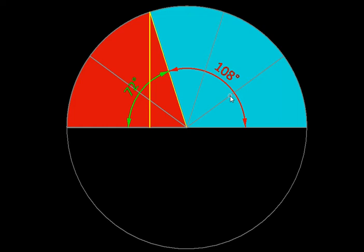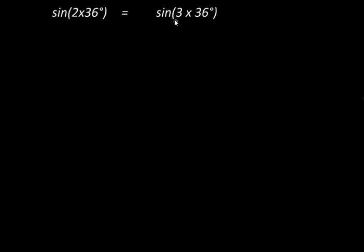For more physical proof, you can think in terms of the height achieved by these two angles — 2 times 36 and 3 times 36 — and that height is equal. Height is the sine function. So we can start with the equation: sine of 2 times 36 equals sine of 3 times 36. That is our starting equation, and I'm going to mark 36 degrees as theta for convenience of writing.